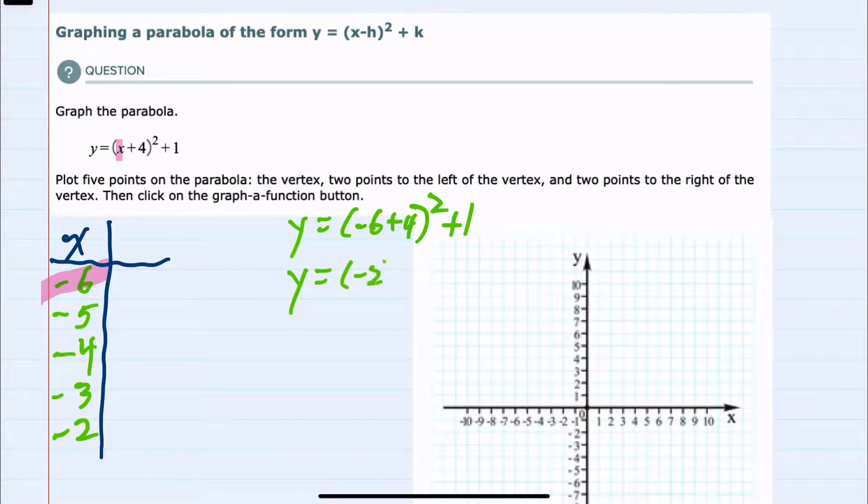Moving to exponents, -2 squared would be a positive 4 plus 1, so y equals 5 would be our y value. When x is -6, y is 5, so I'll add that coordinate (-6, 5).